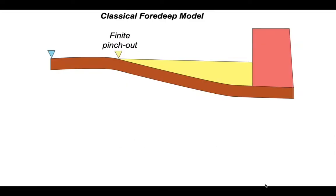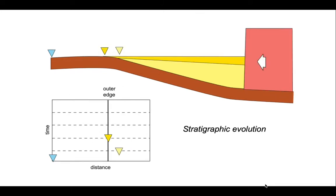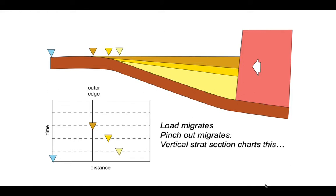So evidence of a migrating and evolving orogenic load. So this is the classical foreland basin model with a finite pinch out in the feather edge of the basin away from the orogenic load. And we can chart the evolution of the stratigraphy through time and distance. So this is the triangle in yellow is the finite pinch out feather edge of the foreland basin. So as we move the load in to the left across here, the outer edge migrates through time like this.